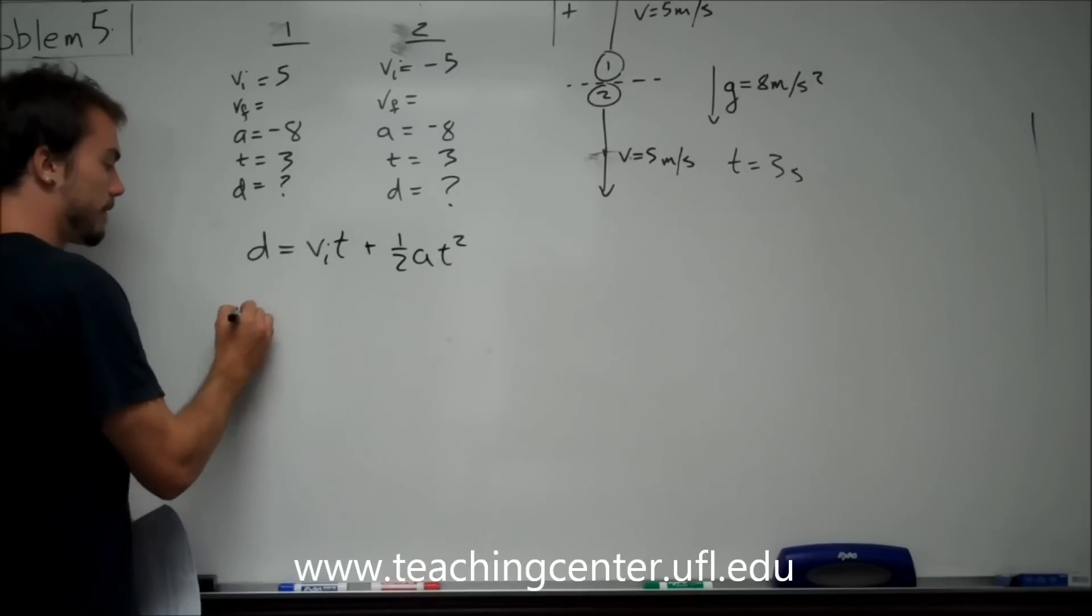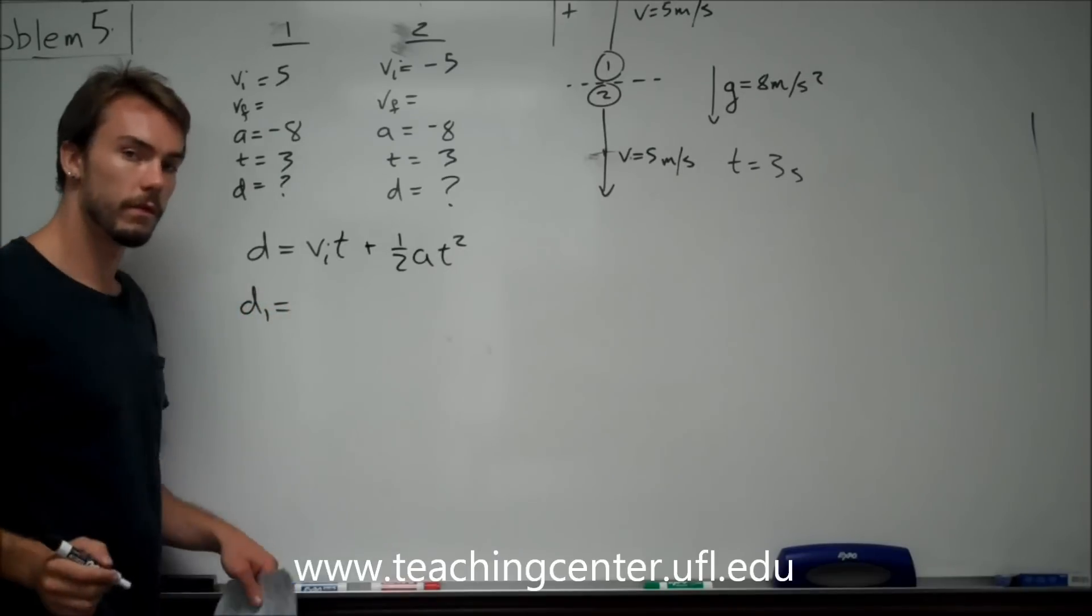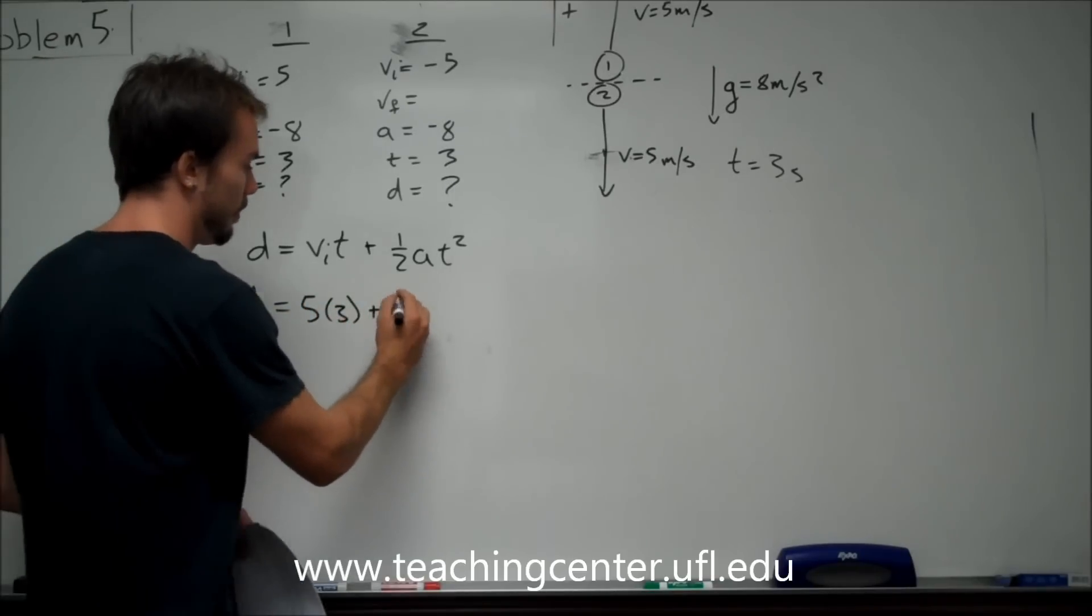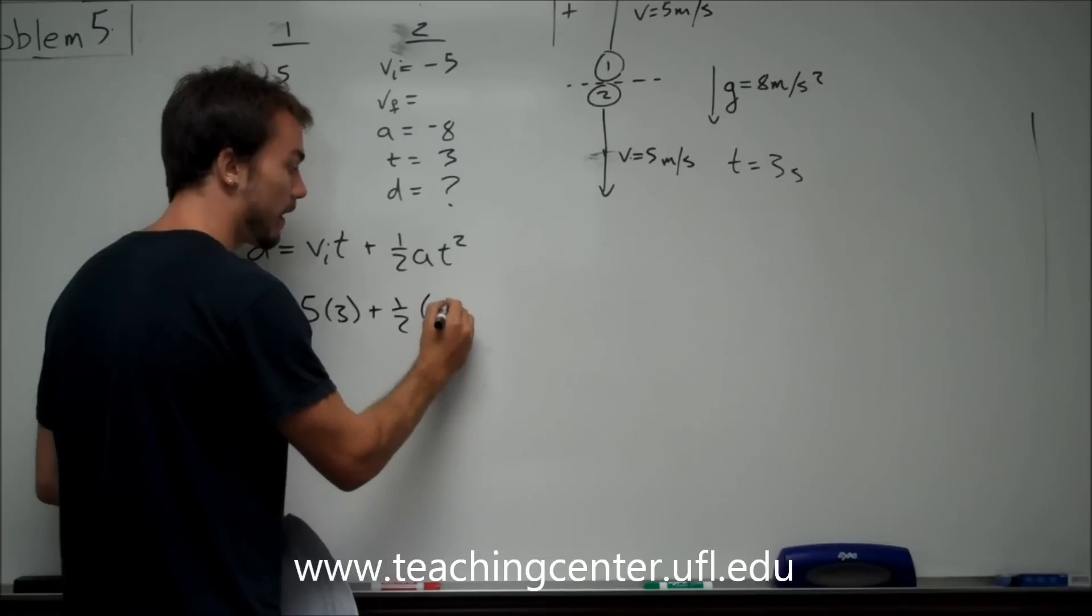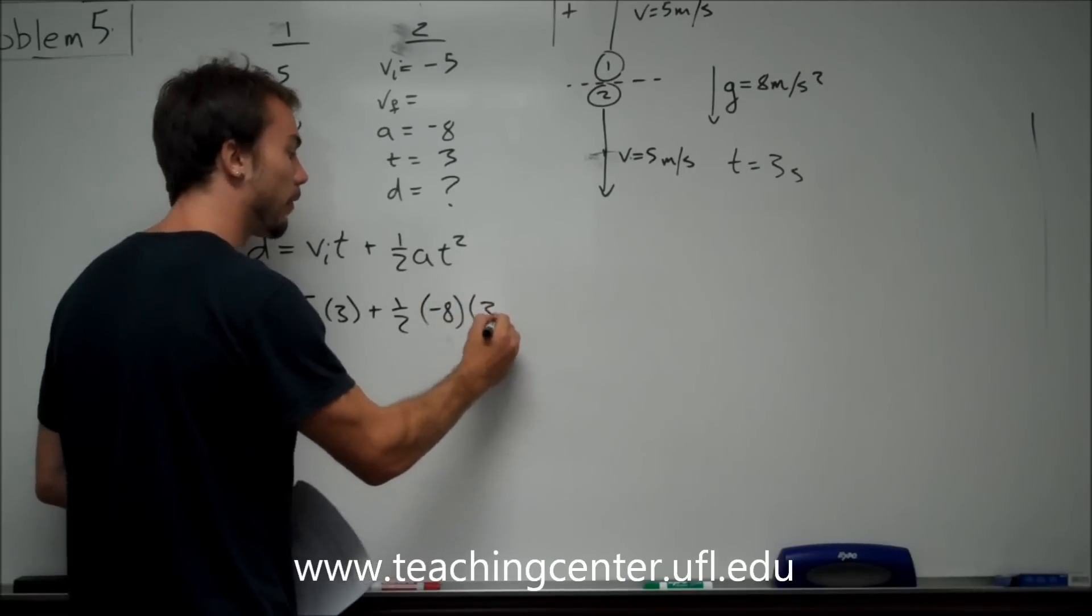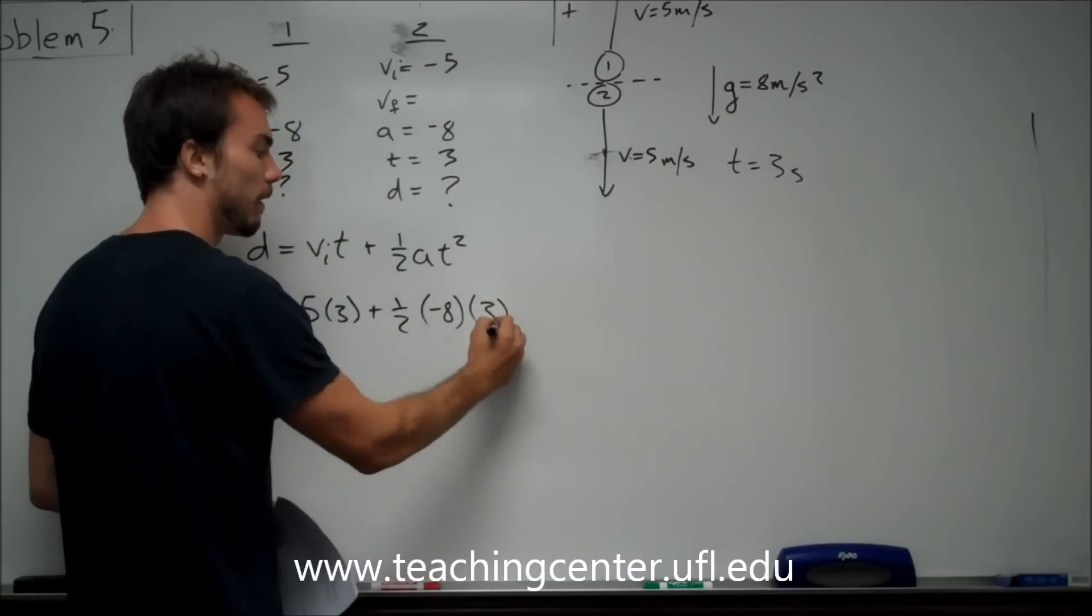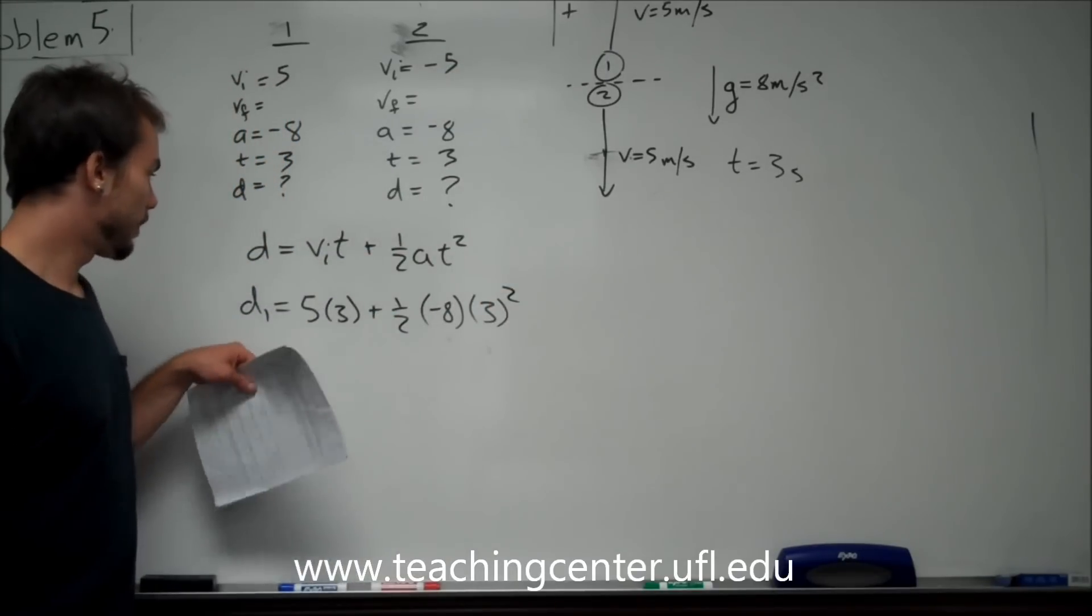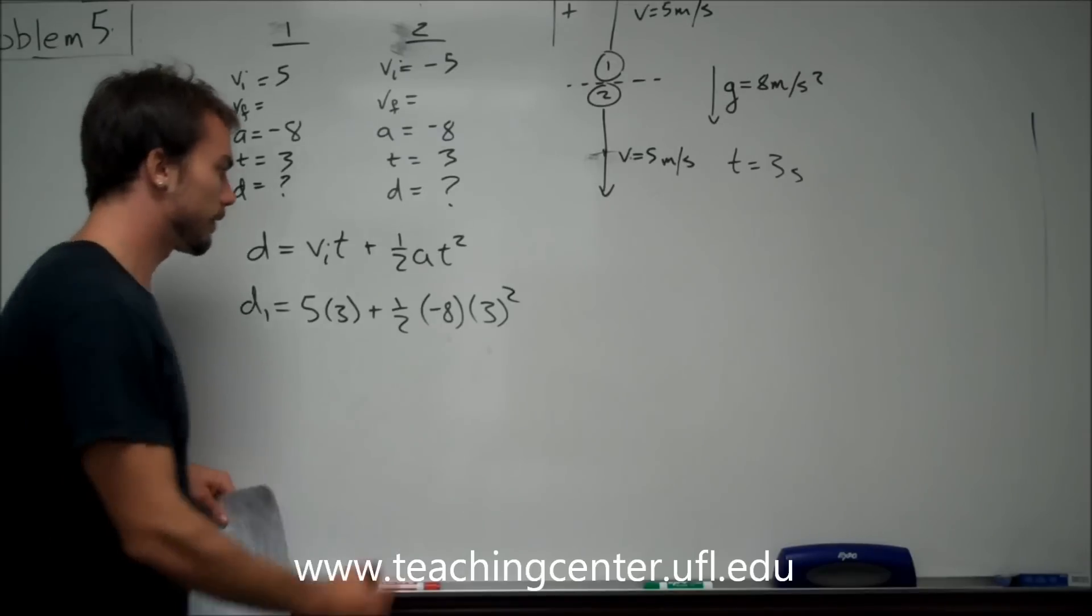So, our first displacement, so the first ball, is going to be our 5 times 3, plus 1/2, our negative, don't forget those negatives in the formulas, the whole reason you write them up here, times 3 seconds squared. So, this is actually going to end up giving you a negative 21.